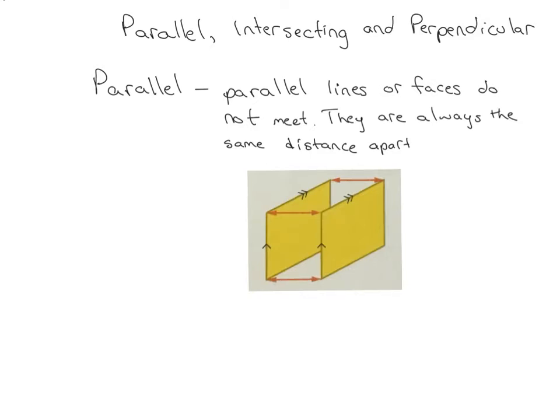Today we're going to look at three important words. First one is parallel, second one is intersecting, and the third keyword today is perpendicular. Let's just take a quick look at them and how they relate to the math ideas, in particular of our 2D and 3D shapes. So the first word is parallel.